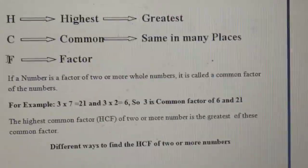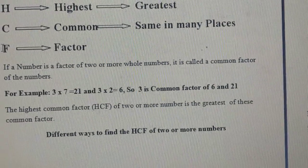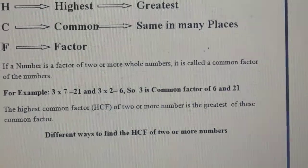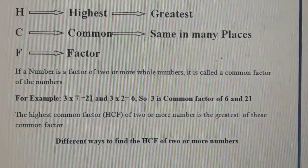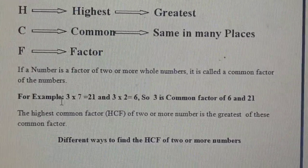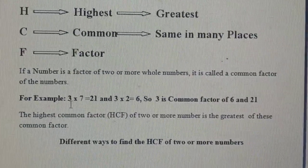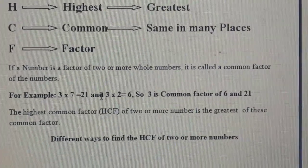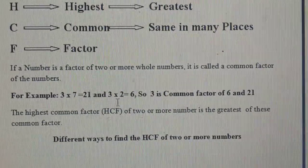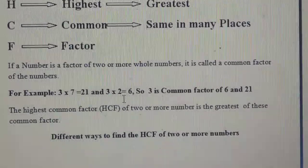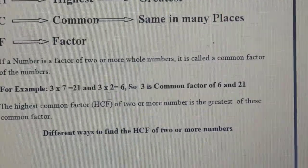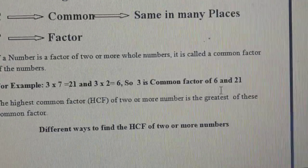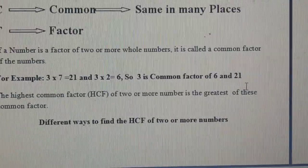Now, what is a common factor? If a number is a factor of two or more whole numbers, it is called a common factor. For example, 3 × 7 = 21, so 3 and 7 are factors of 21. And 3 × 2 = 6, so 3 and 2 are factors of 6. Since 3 is a factor of both 21 and 6, it is a common factor of 6 and 21.